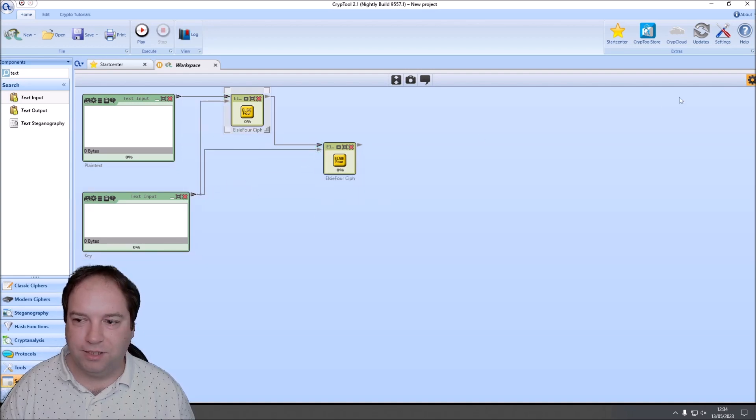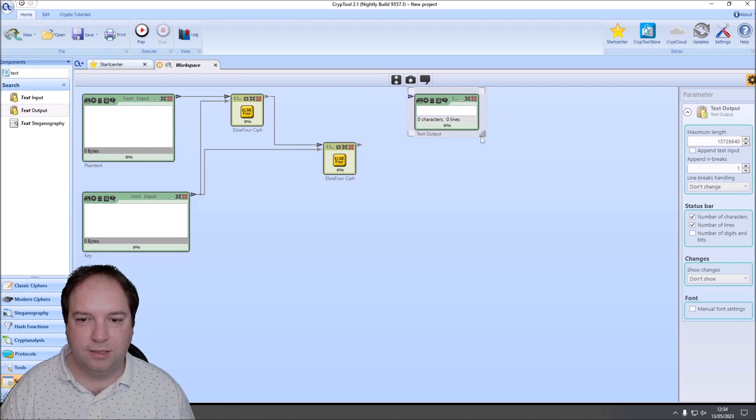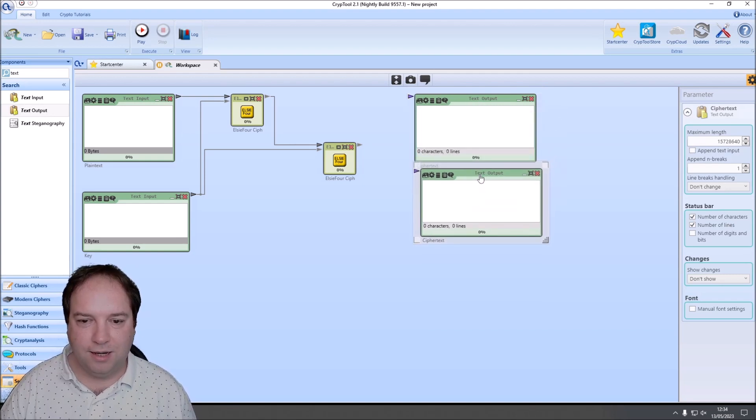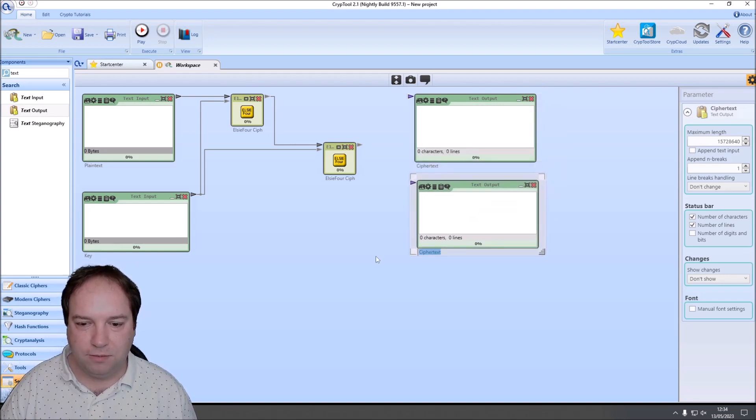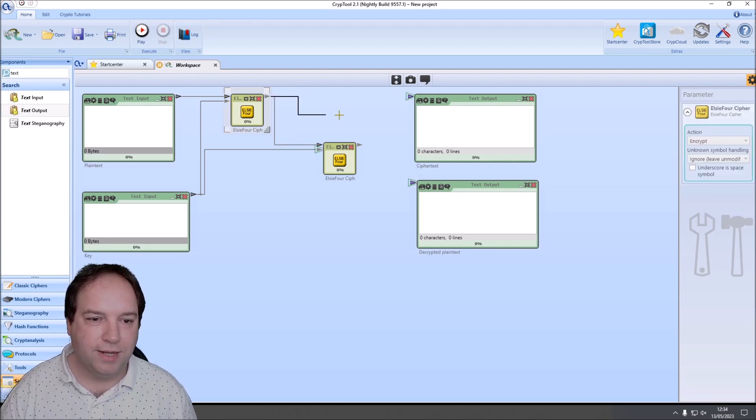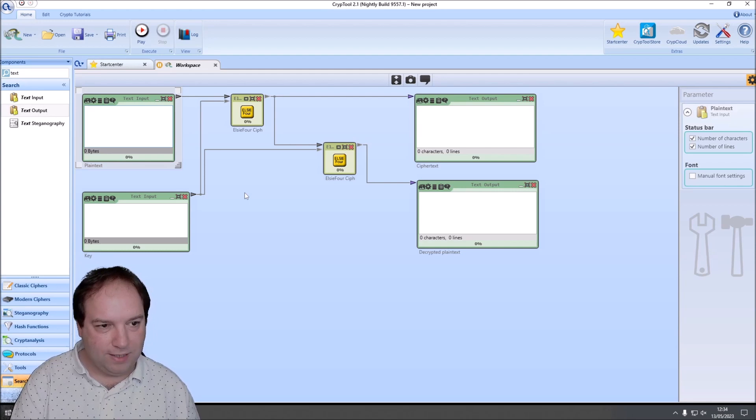Then we have to have a look here. We have action encrypt. And here we need action decrypt. Then of course we need a text output here. This will be our cipher text. And we copy this. And this here will be our decrypted plain text. Of course we have to connect the LC4 cipher component with the cipher text text output. And the second one with the decrypted plain text text output.